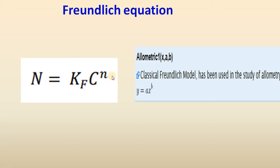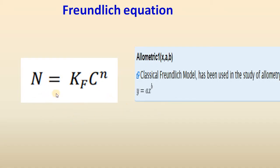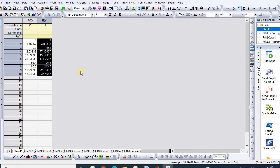If we compare this equation with the allometric one function, which is the classical Freundlich model, we see that n equals y, kf equals a, and n equals b. So if we fit the Freundlich equation with the allometric function, we can easily calculate the Freundlich equation parameters.